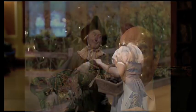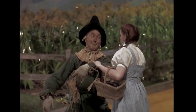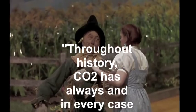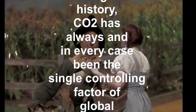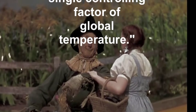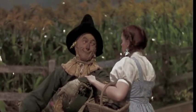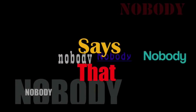So the fundamental assumption, the most fundamental assumption of the whole theory of climate change due to humans, is shown to be wrong. The straw man here is that climate scientists say throughout history, CO2 has always, and in every case, been the single controlling factor of global temperature. The reason that's a straw man is nobody says that.